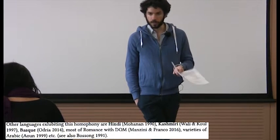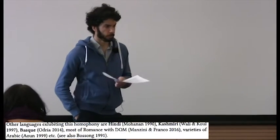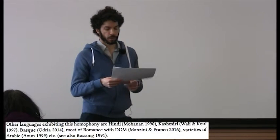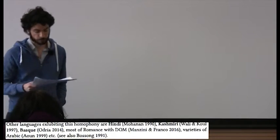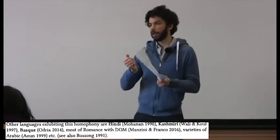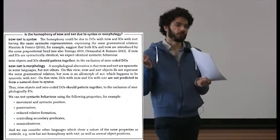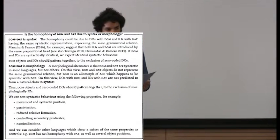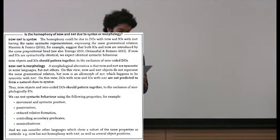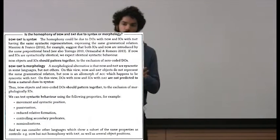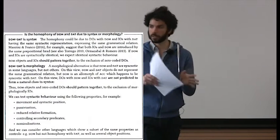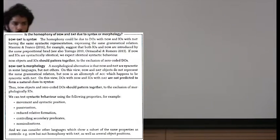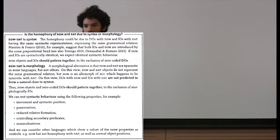Other languages with something similar include Hindi, Kashmiri, and at least some varieties of Basque. Most Romance languages which have differential object marking show this kind of homophony, and it's also found in some languages outside of the Indo-European family. I want to ask where this homophony comes from. One extreme hypothesis is that the homophony is because of syntax — when we have 'a' in Spanish on both direct and indirect objects, it's because they express the same grammatical relation, and whatever object is in that relation is spelled out with 'a.'